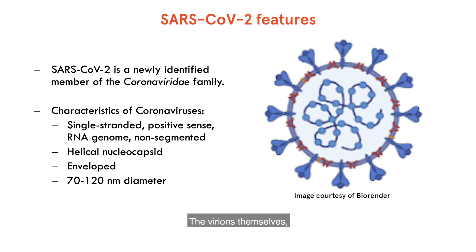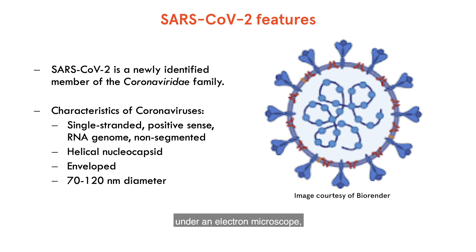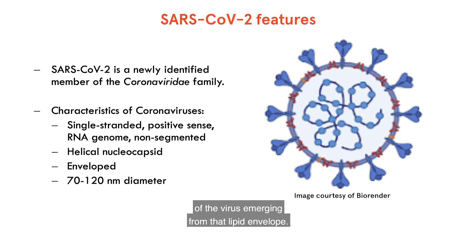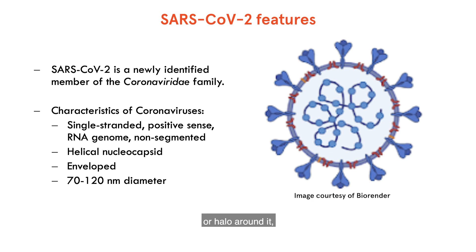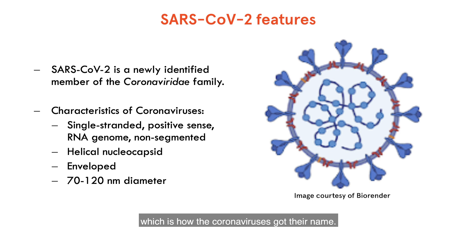This is encapsulated within a lipid envelope. The virions themselves are between 70 to 120 nanometres in diameter. When we visualise these virions under an electron microscope, we can see these characteristic spike proteins of the virus emerging from that lipid envelope. And that gives the virus these typical corona, or halo, around it, which is how the coronaviruses got their name.